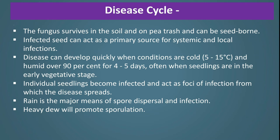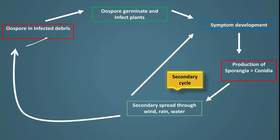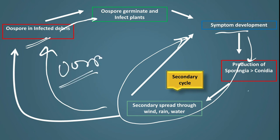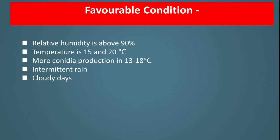Disease Cycle: The pathogen survives in infected plant debris. Then the spores germinate and cause infection. After infection, sporangiophores are produced and spread via wind or rain to new plants, completing the secondary infection cycle. The pathogen can survive until the next season as oospores.